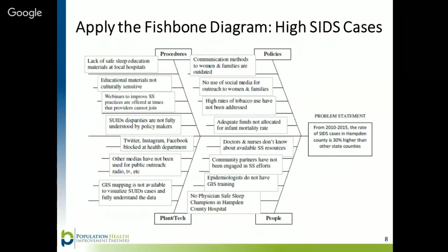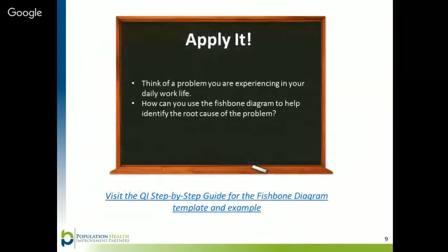Now that the diagram is filled out, this health department can take a look at the diagram and decide which factors to prioritize and start brainstorming solutions. There can be more than one root cause of an issue, and the fishbone diagram is a tool to help you identify all possible underlying causes before tackling solutions. Think of a problem you are experiencing in your daily work life — how can you use the fishbone diagram to help identify the root cause? Use the provided link to check out the quality improvement step-by-step guide for links to the fishbone diagram template and examples.